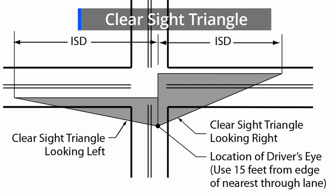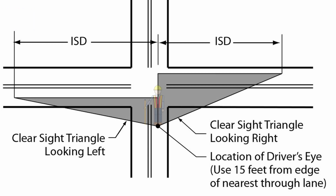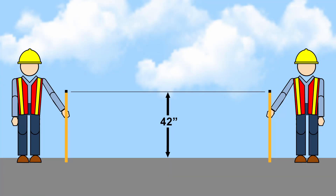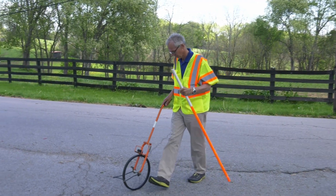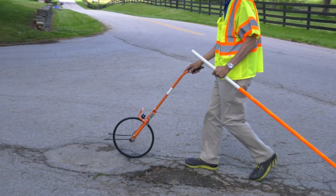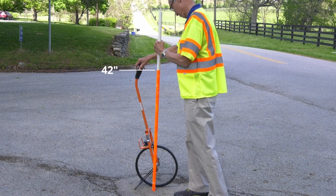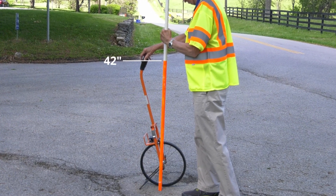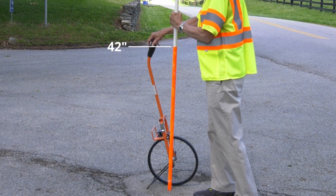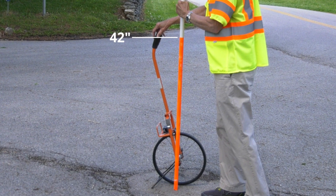To perform a check for adequate sight distance, two people are typically needed. One person takes a position approximately 15 feet back from the edge of the major road travelway. The other person goes down the road a distance equal to the required intersection sight distance. Each person has an object to sight by, marked at 42 inches above the pavement. The position 15 feet back from the edge of the major road travelway approximates the position of the driver. An object painted orange up to the 42-inch height is used to sight by. This height is the standard eye height for a passenger vehicle driver and approximates their line of sight.